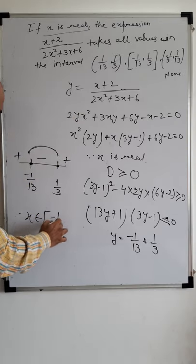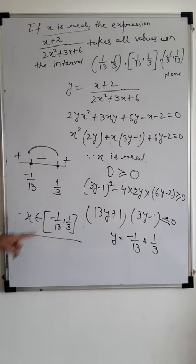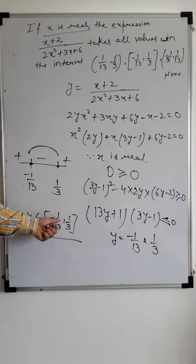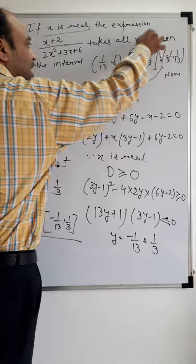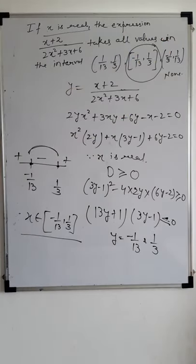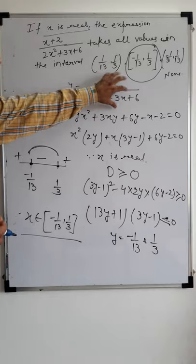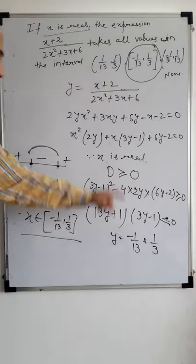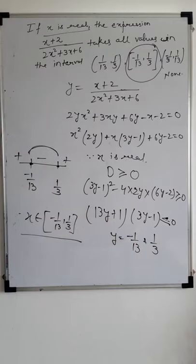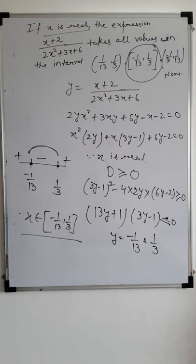From the wavy curve analysis, we take the interval where the expression is less than or equal to zero. So y belongs to the closed interval [-1/13, 1/3]. This is a closed interval because of the 'equals to' part. This is the answer. The values y = -1/13 and 1/3 are the values that x (i.e., y) takes — so x belongs to [-1/13, 1/3] in closed interval. This is also the range of this function: -1/13 is the minimum and 1/3 is the maximum value.